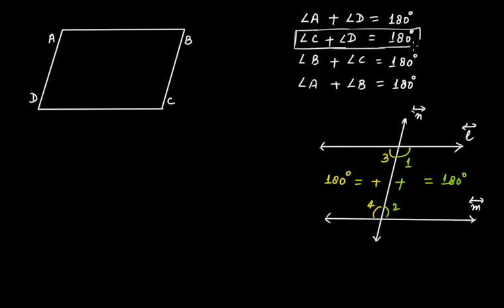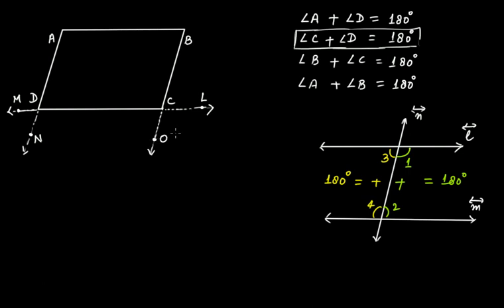Now let's do the formal proof for angles C and D. We extend line segment CD on both sides, taking a point L on one side and a point M on the other. We also extend line segment AD on both sides, taking a point here and calling another point O. We then name angles: angle 1, angle 2, angle 3, and angle 4 at the respective intersections.